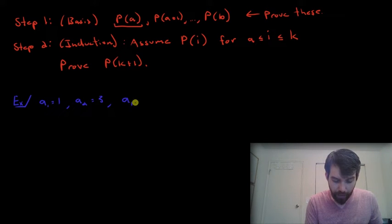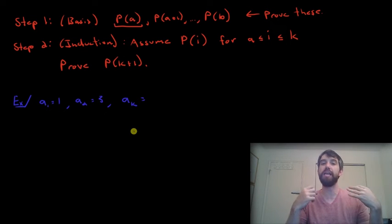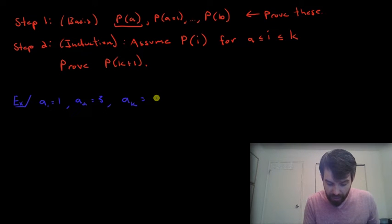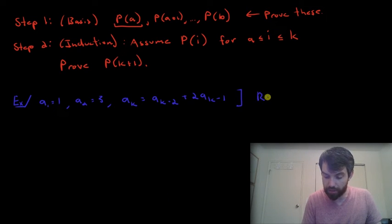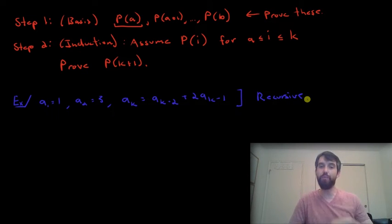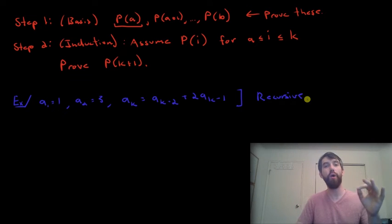The generic kth term is going to be defined what we're going to say is recursively. What it's going to be is that a_k is going to be equal to a_{k-2} plus twice a_{k-1}. So we have to understand what we mean by this, but this is a so-called recursive definition. And we use the word recursive any time where one entry in the sequence depends on previous entries in the sequence. In this case, to get to a_k, you need to know what a_{k-2} is and what a_{k-1} is.